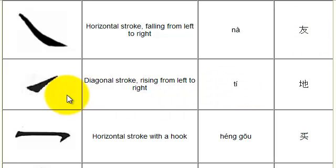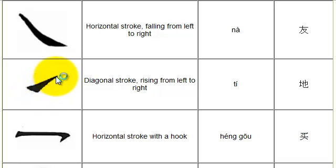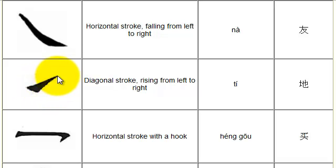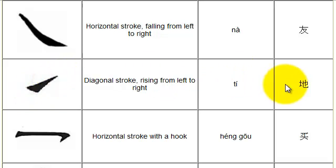Next is ti. Ti is a rising diagonal stroke — you start at the left and draw up to the right. Here you can see an example of ti being used in the lower left-hand corner of this character.